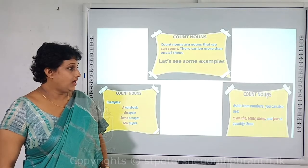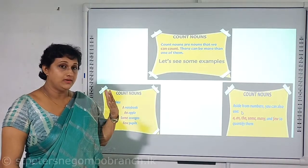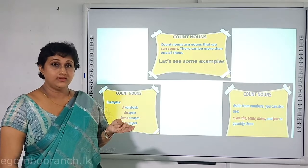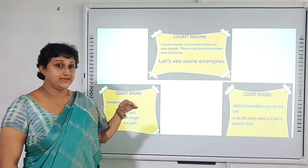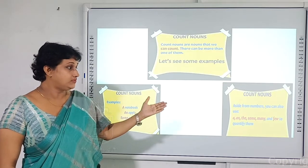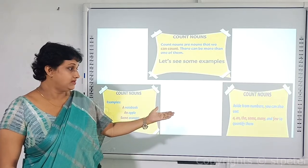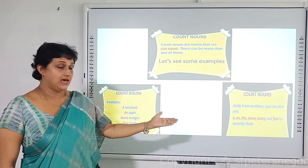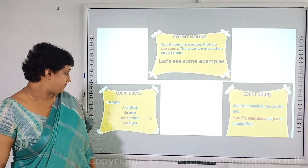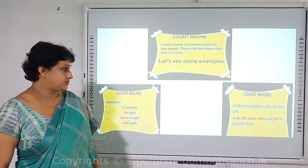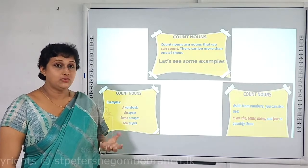So these are called count nouns, which you can count. When it comes to mass nouns, they are nouns which cannot be counted. They can also be called uncountable nouns. Generally, they do not have plural forms and we do not use numbers to count them. For example, 'sugar' is uncountable — you cannot say one sugar, two sugar.